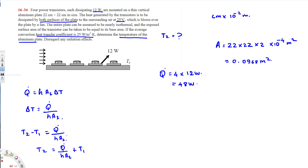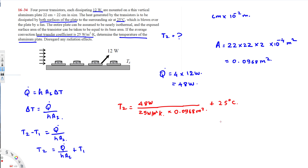Plugging in the values: T2 equals 48 watts divided by the heat transfer coefficient of 25 watts per meter squared Kelvin, times the area of 0.0968 meter squared, plus the air temperature of 25 degrees Celsius. The meter squared and watts units cancel out, leaving us with a temperature value.